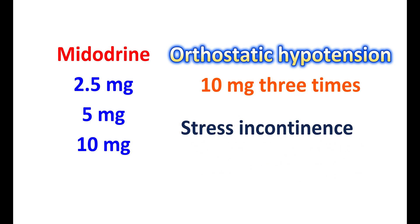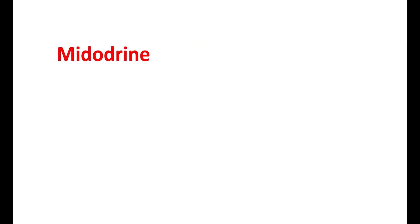For stress incontinence, Midodrine can be used off-label at a dose of 2.5 to 5 mg, given either twice or thrice daily based on requirements. In people with renal impairment, the dose is decreased to 2.5 mg. Midodrine is recommended at 10 mg three times daily during daytime hours when people are in the upright position performing daytime activities.